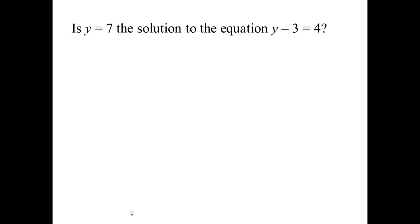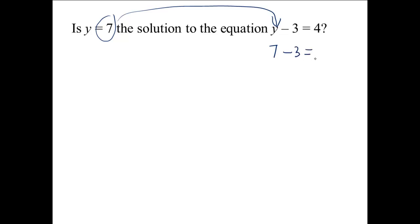Is y equals 7 the solution to the equation y minus 3 equals 4? We will take what y is supposedly equal to — 7 — and replace it where we see the variable y in the equation. Doing so gives us 7 minus 3 equals 4. That is a true statement. So yes, y equals 7 is the solution to the equation y minus 3 equals 4.